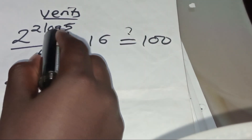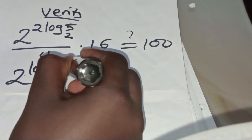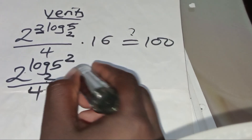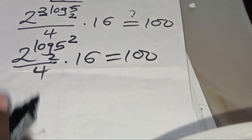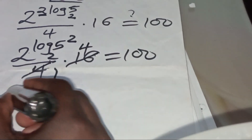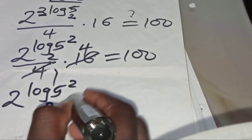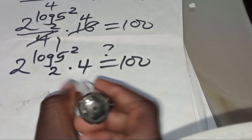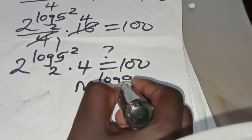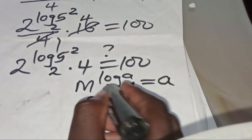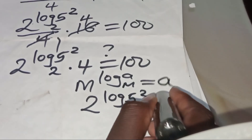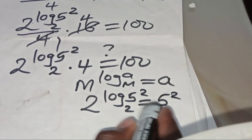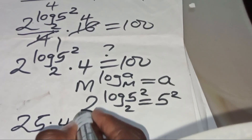Now we can express 4 as 2 to the power 2, so we have 2 to the power (2 times log base 2 of √5), which is the same as log base 2 of 5 squared, giving 5 squared. So 2 to the power (log base 2 of 5 squared) equals 5 squared, which is 25. Substituting, we have 25 divided by 4, multiplied by 16, which should give us 100.